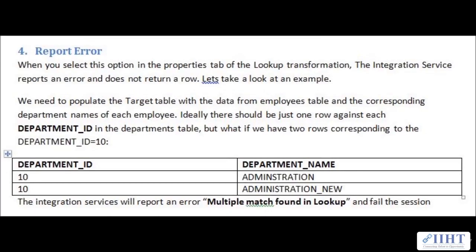The fourth option is 'report error'. When you select this option in the properties tab, the integration service reports an error and does not return a row. Using our previous example where department ID 10 has two corresponding department names, the integration service will report an error of 'multiple match found in lookup', fail the session, and no rows will be loaded to the target table.